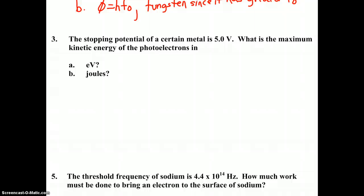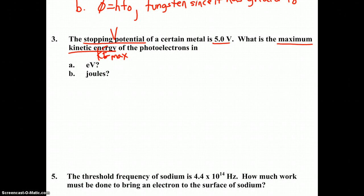The stopping potential of a certain metal is 5 volts. What is the maximum kinetic energy — KE max — of the photoelectrons? They want this answer in electron volts and in joules. Our answer here is going to come down to what's the relationship between stopping potential and maximum kinetic energy. If we go to page 2 of our notes, we can see the apparatus that was used to calculate the maximum kinetic energy of the photoelectrons.